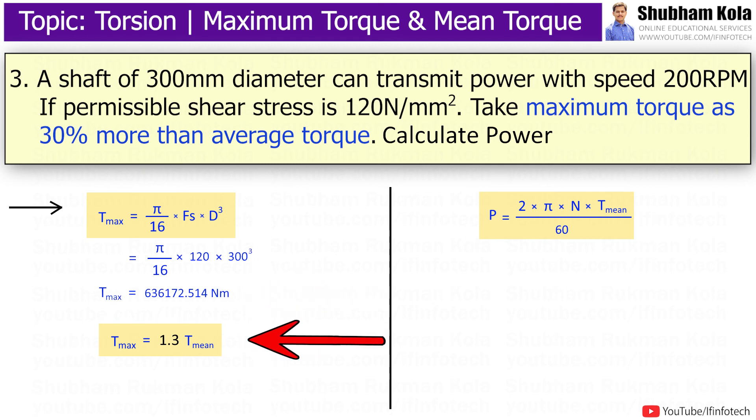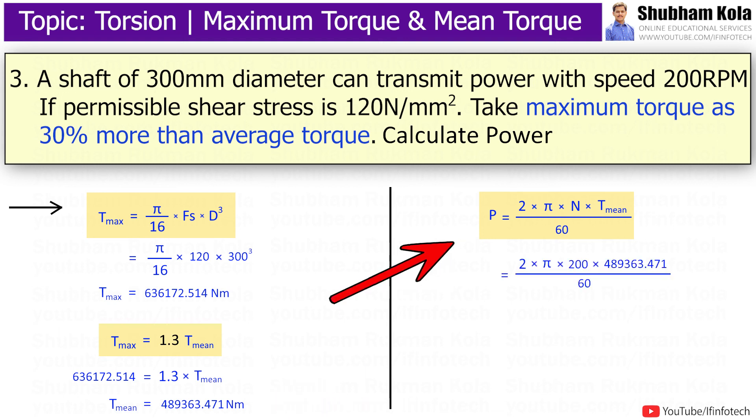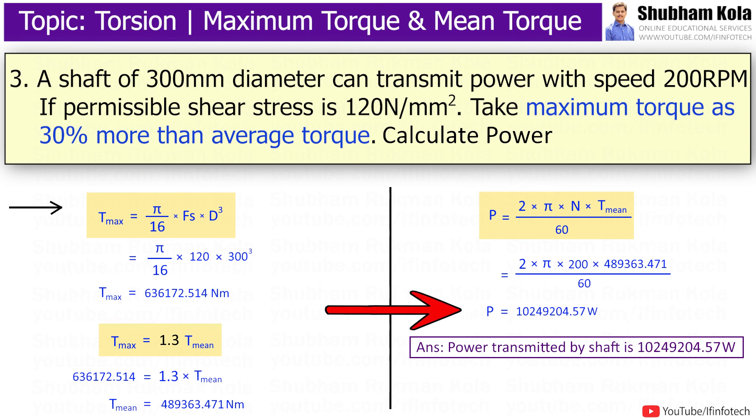And T_max = 1.3T_min. Therefore, calculated mean torque 489363.471 Nm. And power is P = 2πNT_min/60. Therefore, the power transmitted by shaft is 10249204.57 Watt.